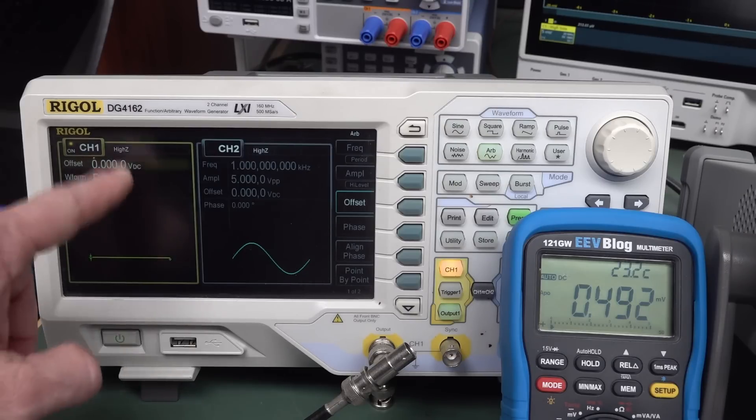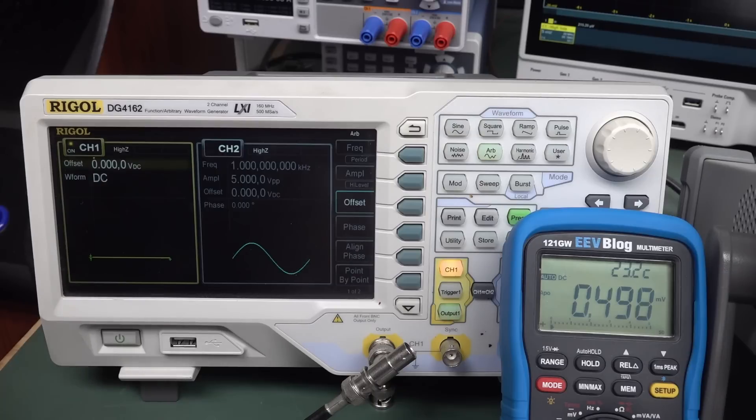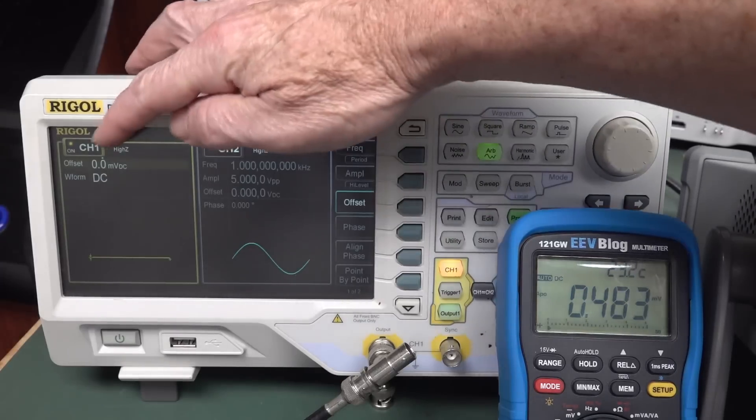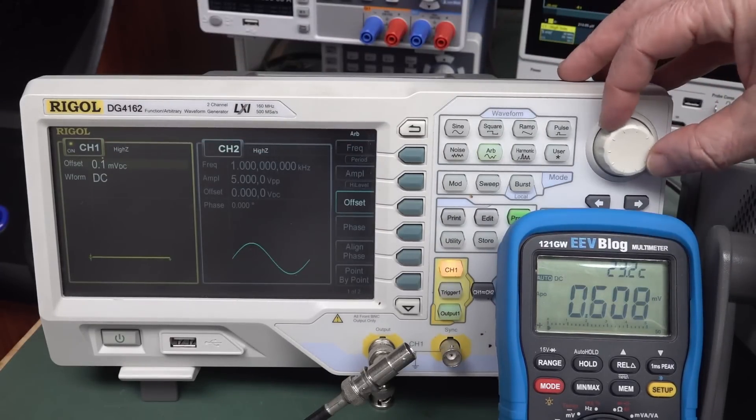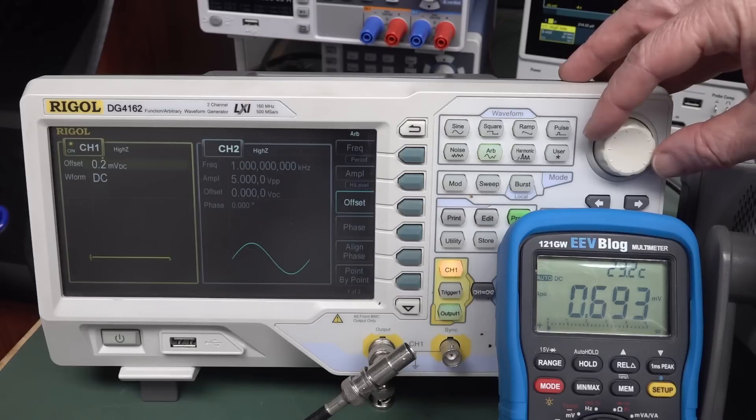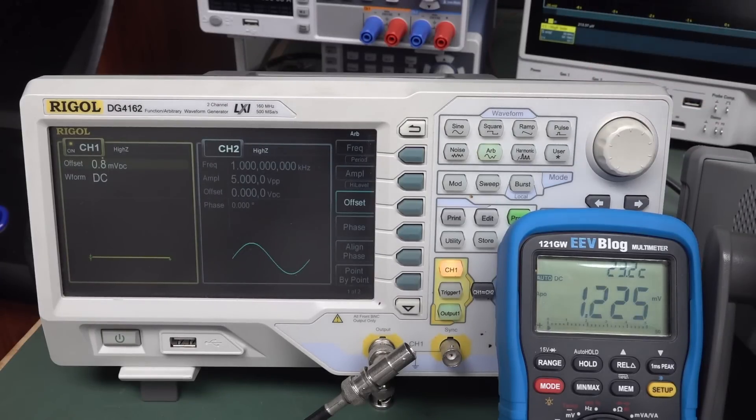So yeah, you can adjust it by 0.1 millivolts, but you're going to be aware you're going to have that offset there, or you may or may not, depending on how decent your signal generator is. But the good news is that you can actually adjust that by 0.1 millivolt increments. Look, 0.6, 0.7, so you can actually jump up in those 0.1 millivolt increments. So you do have the resolution there to actually do this.